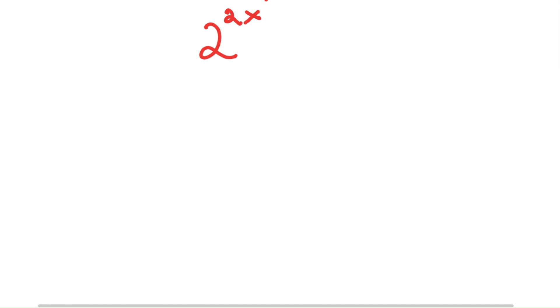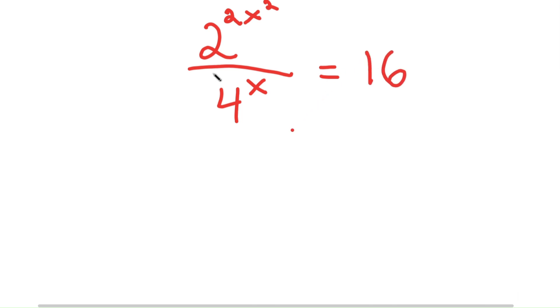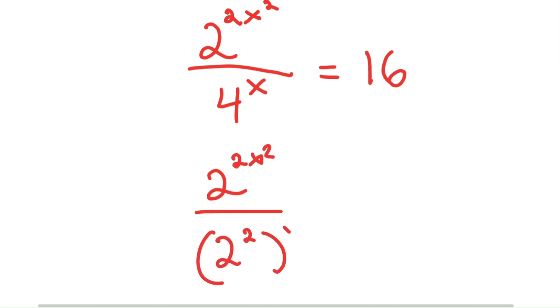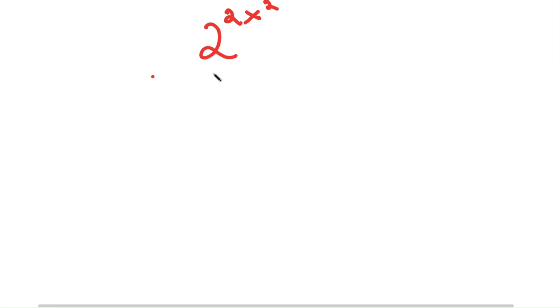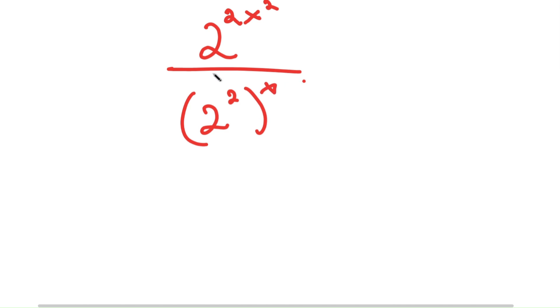In this video I'm going to solve the equation 2 to the power of 2x squared over 4 to the power of x is equal to 16. To solve this, I'm going to start by writing this as 2 to the power of 2x squared over 2 squared to the power of x is equal to 2 to the power of 4, so that all my terms are in powers of 2.